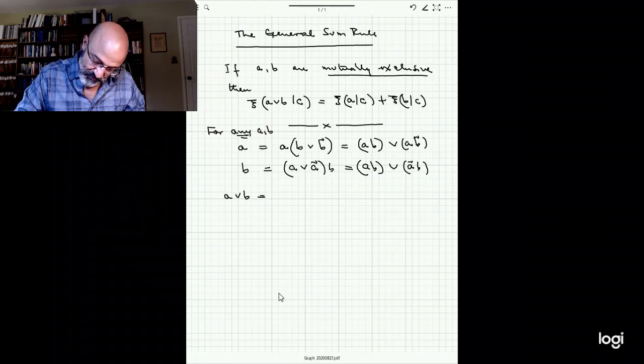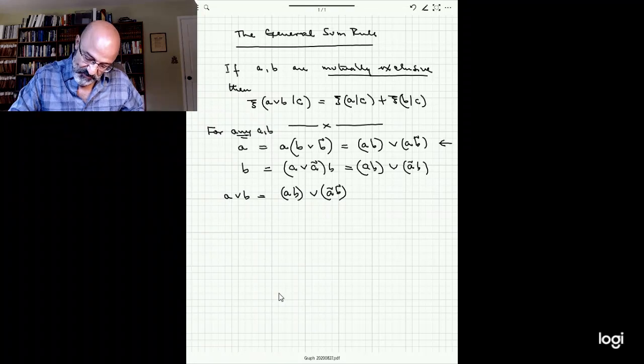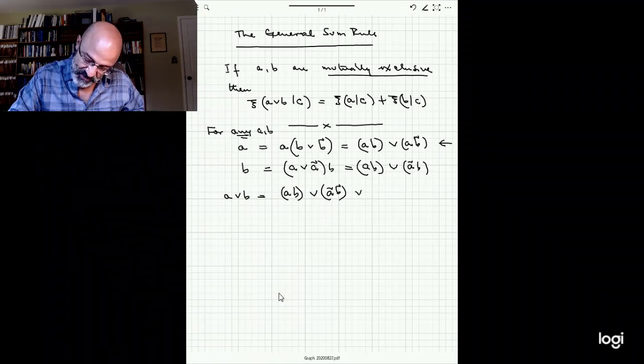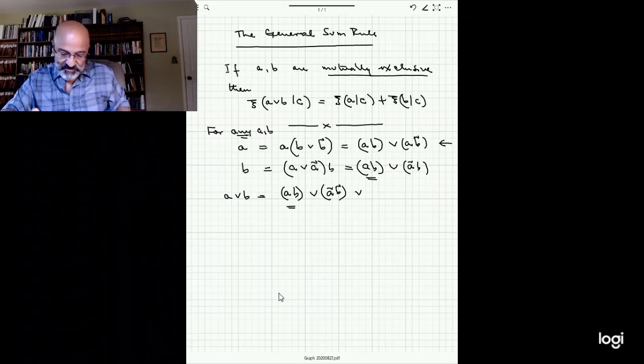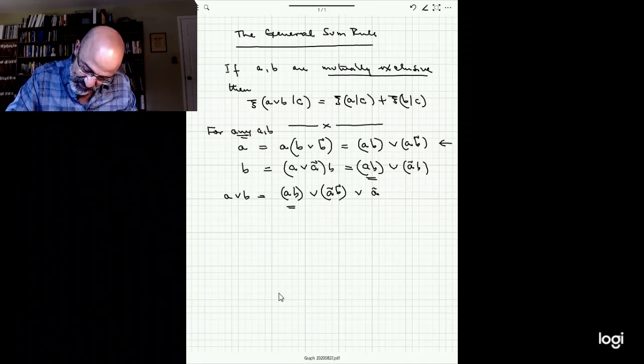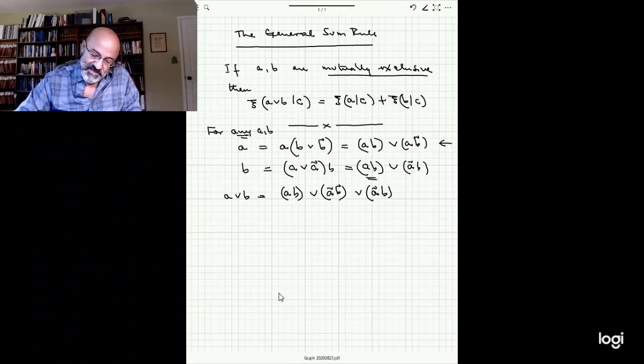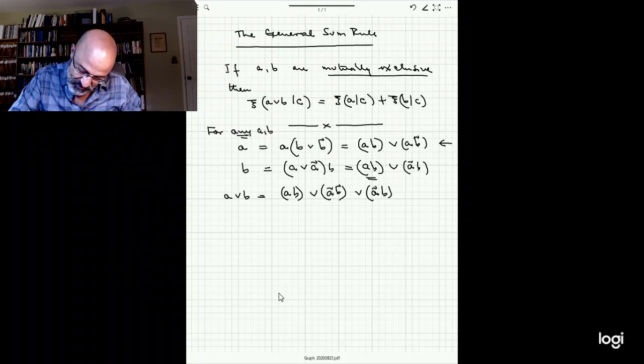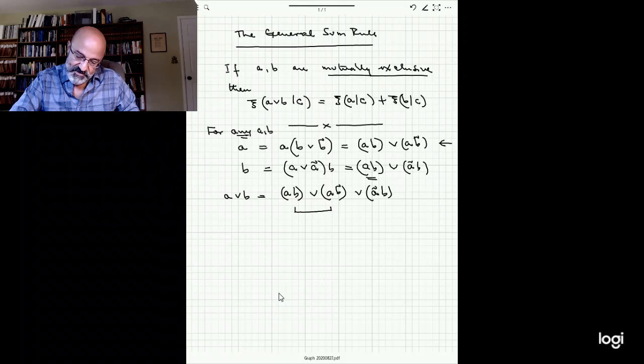So one of the things that we can see now is that A or B is going to be equal to, I'll write the A, AB or A not B. That comes from the first statement. And now I'll write the B or B. B is going to be AB or (not A)B, but the AB is already included here. So I don't need to write it because A or A is the same as A, right? So I don't need to write that.